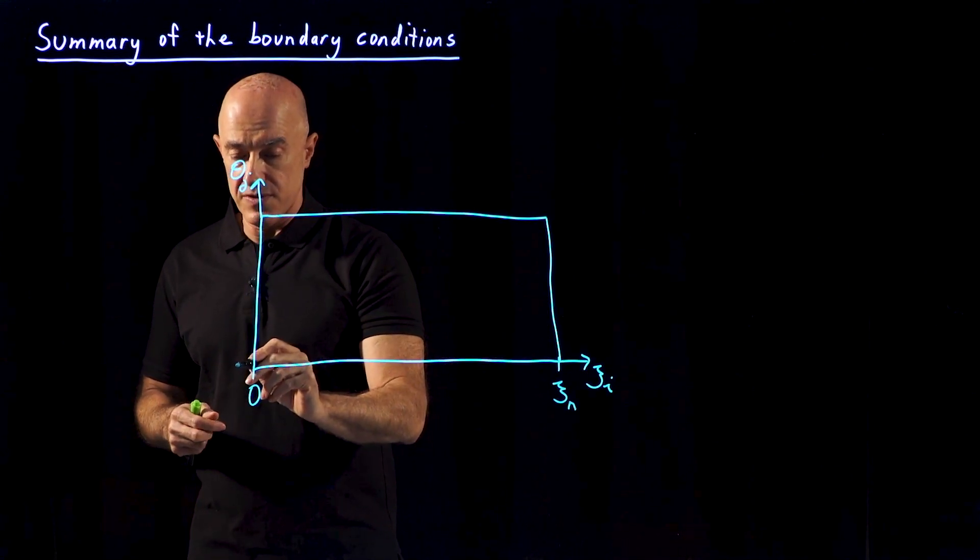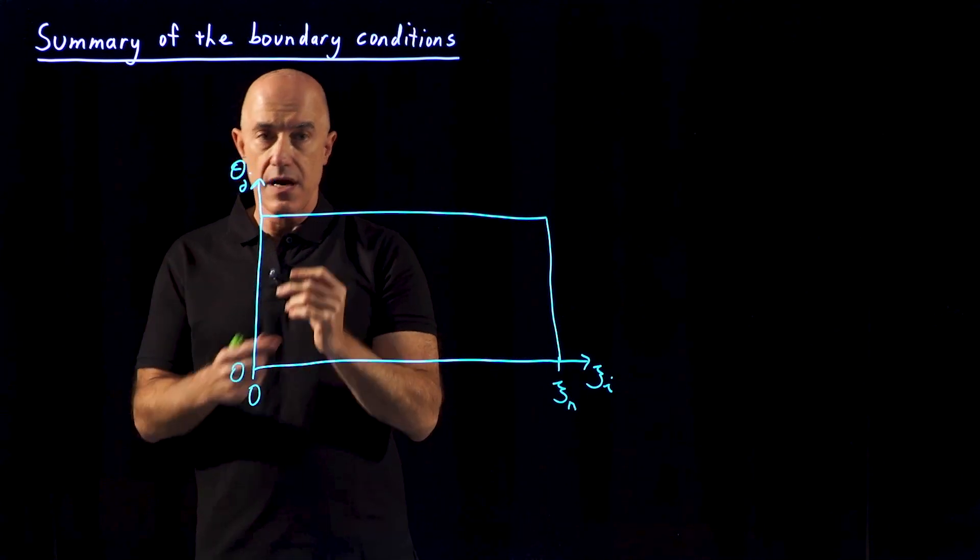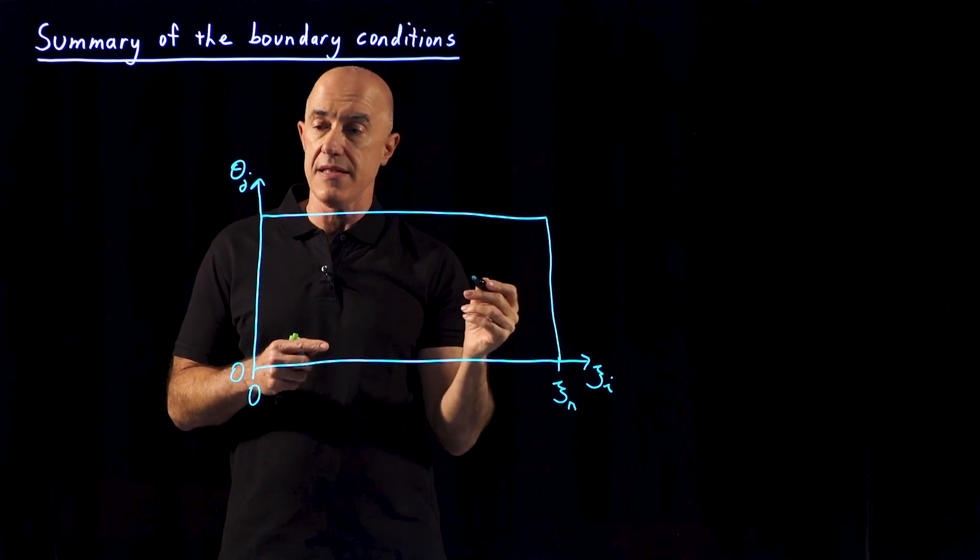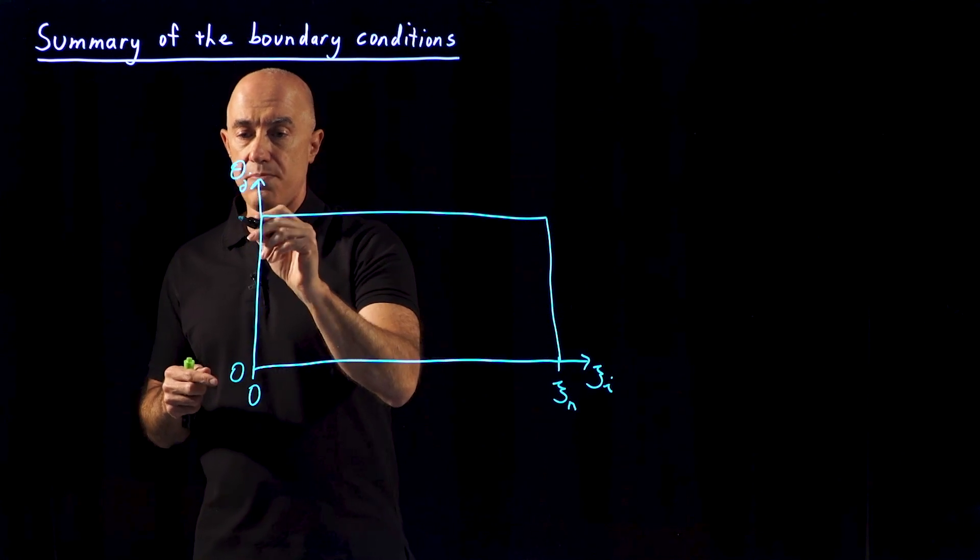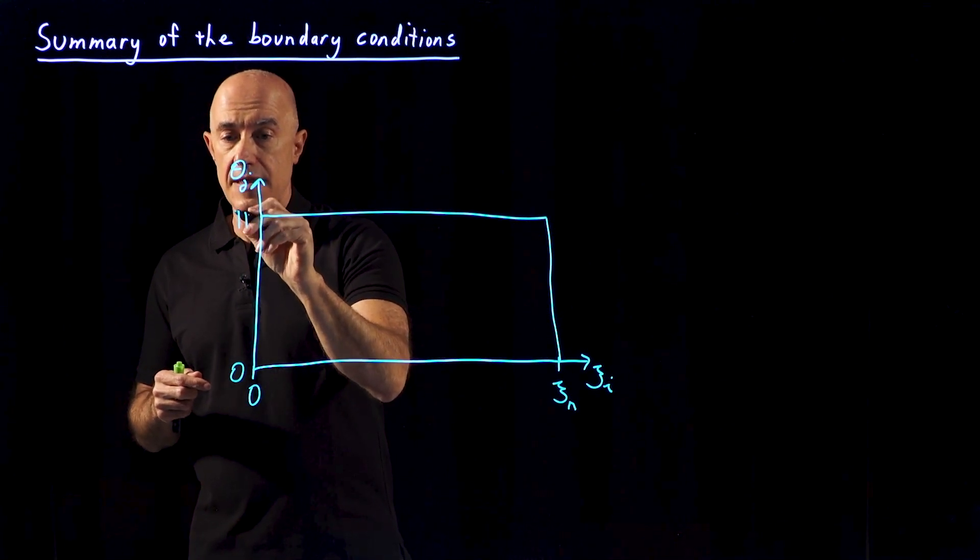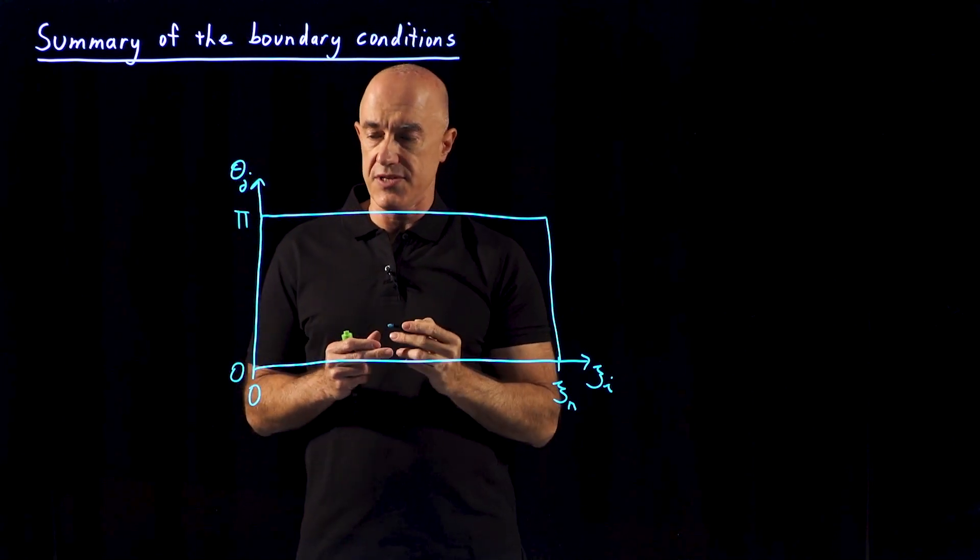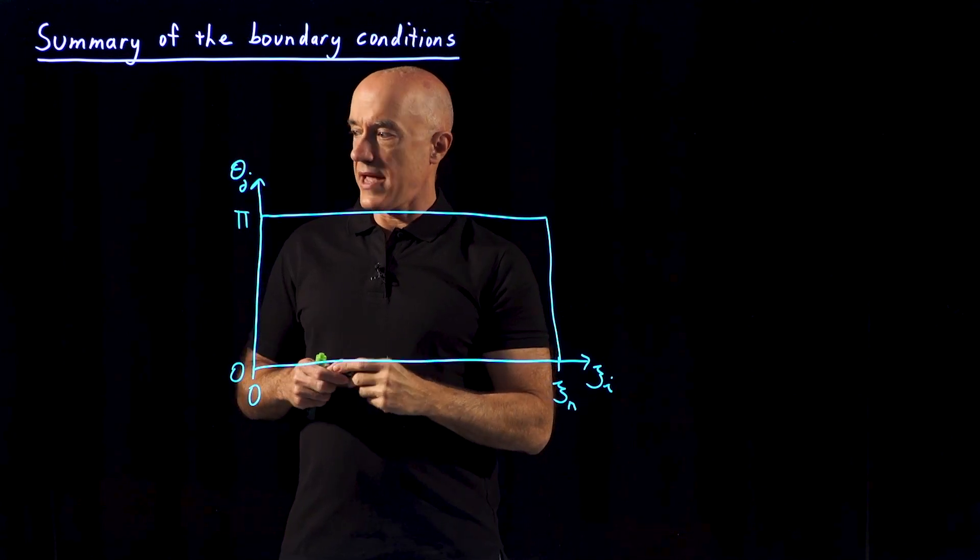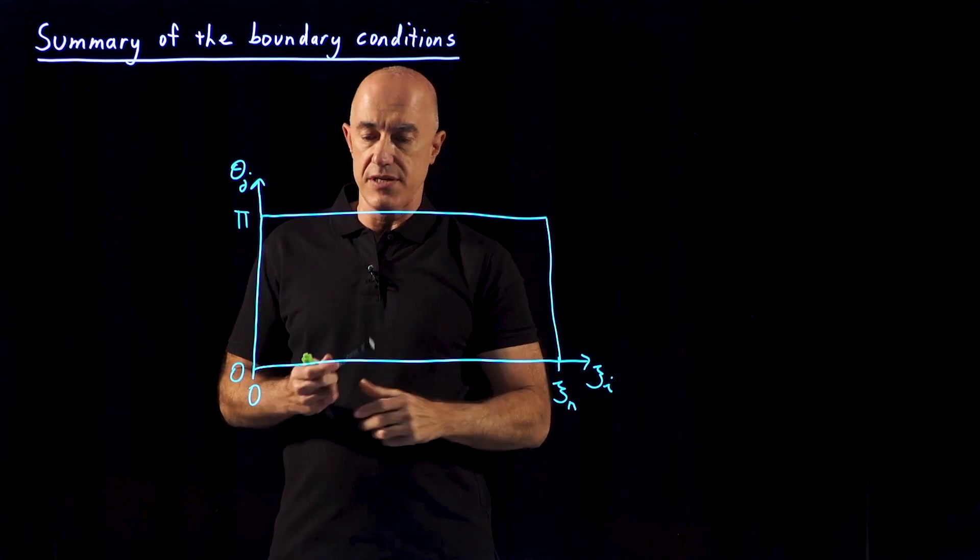The theta variable goes from 0 on the midline behind the cylinder to pi on the midline in front of the cylinder. Okay, so what are the boundary conditions?